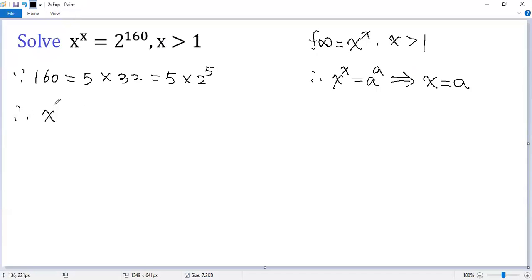So x to the power of x equals 2 to the power of 160, we can write as 2 to the power of 5 times 2 to the power of 5.